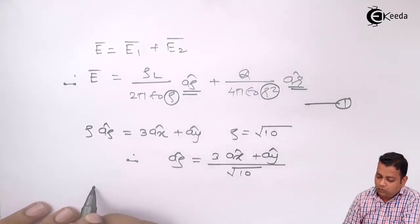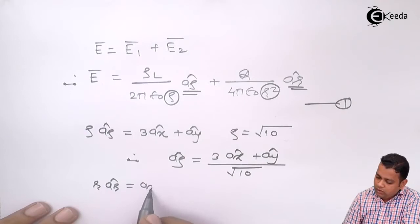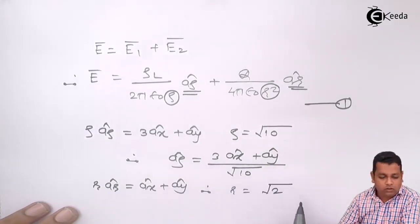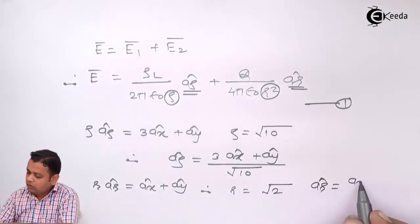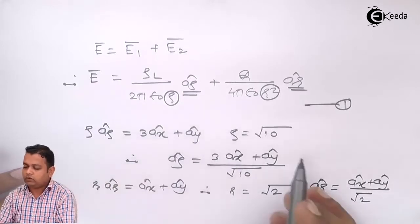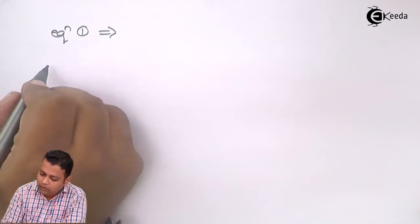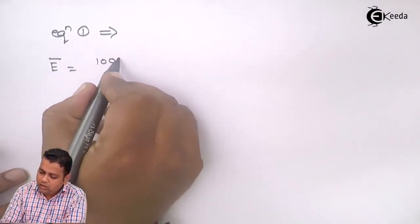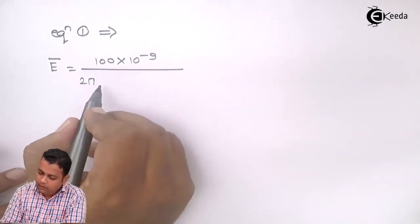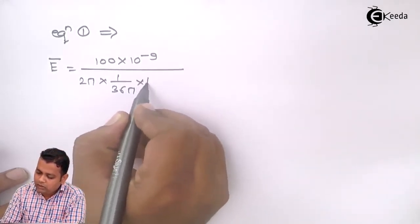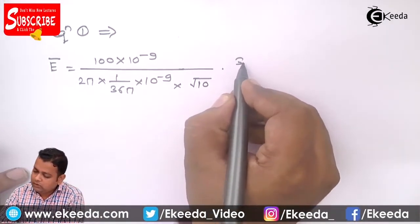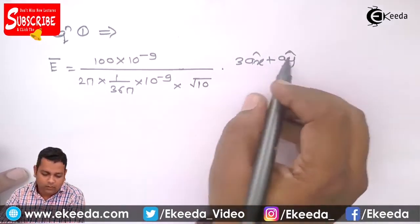For the second formula, R·a_R cap from the point charge at P(2,0,0) to field point A(3,1,0) gives: R·a_R cap equals a_x cap plus a_y cap. Therefore the magnitude R equals under root 2, and the unit vector a_R cap equals (a_x cap + a_y cap) divided by under root 2.